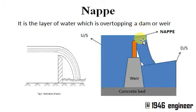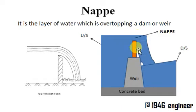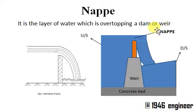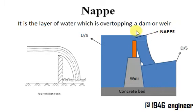If you look at this picture, this is the layer of water which is overtopping this weir. This layer of water is called a nappe.